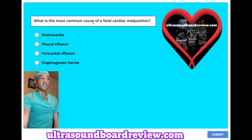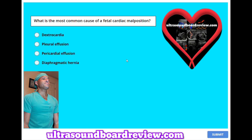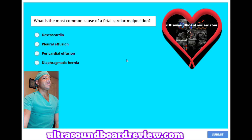What is the most common cause of a fetal cardiac malposition? A, dextrocardia. B, pleural effusion. C, pericardial effusion. Or D, diaphragmatic hernia. The answer is D, diaphragmatic hernia.